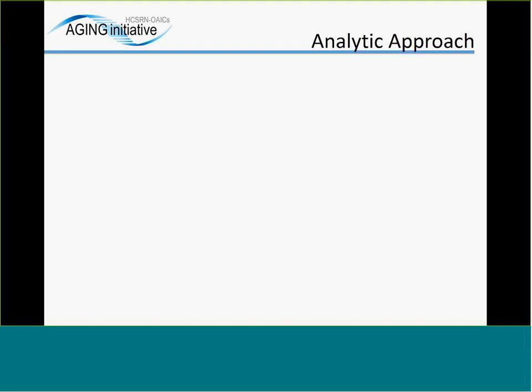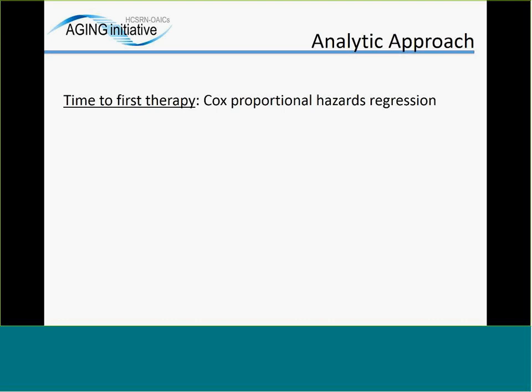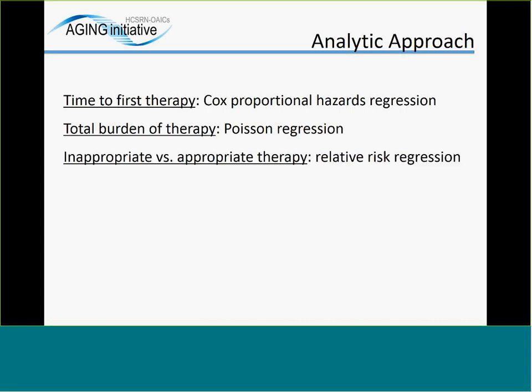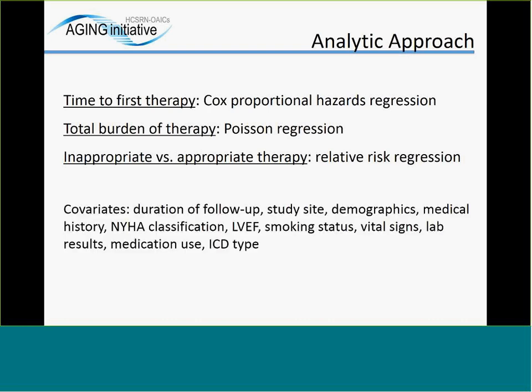There were three ICD therapy outcomes. First, we used Cox proportional hazards regression to examine the association of multiple chronic conditions with time-to-first therapy, whether any therapy, appropriate therapy, or inappropriate therapy. We also examined the total burden of all inappropriate and appropriate therapy using Poisson regression. Lastly, we examined the relative risk of inappropriate versus appropriate therapy using relative risk regression.